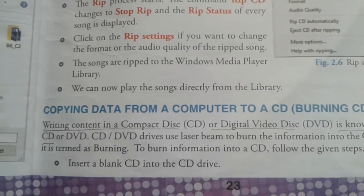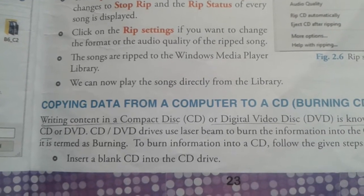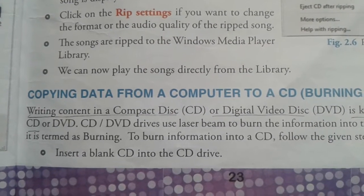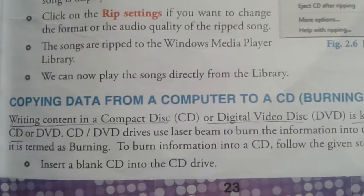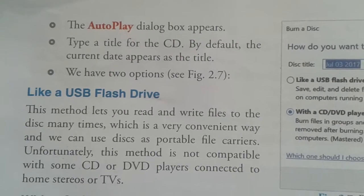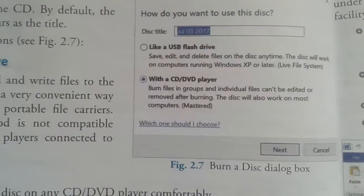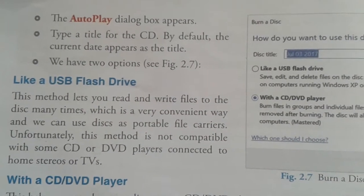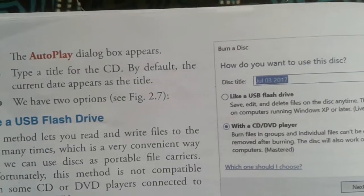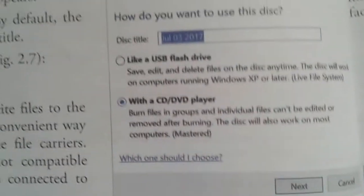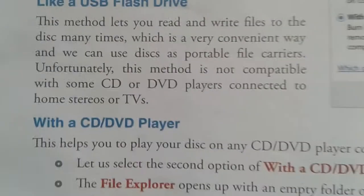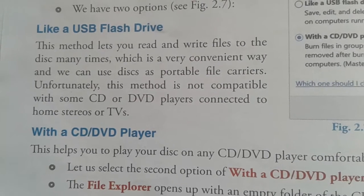CD or DVD drives use laser beams to burn the information into the CD or DVD; hence it is termed as burning. To burn a CD, follow these steps: the autoplay dialog box appears automatically. Type a title for the CD; by default, the current date appears as the title. You have two options: like a USB flash drive, and with a CD and DVD player.